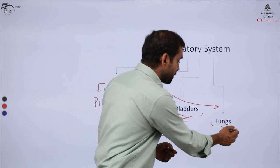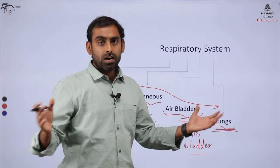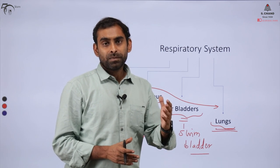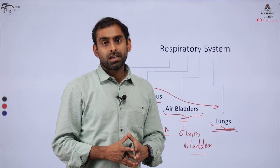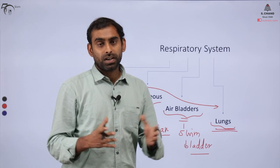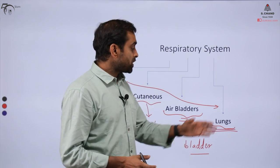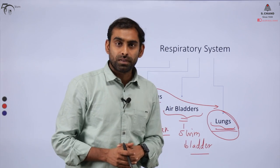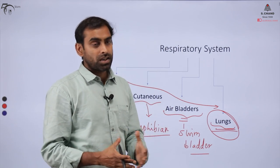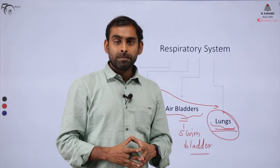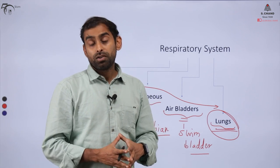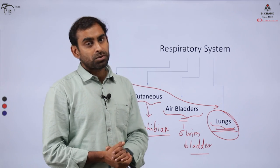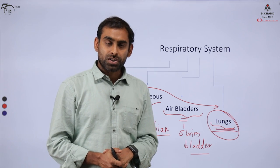Finally, we have lungs, which are present in most of the taxons — including reptiles, amphibians, mammals, and also aves, that is birds. In all these cases lungs are present. The anatomy of lungs differs across different organisms — their shape, size, and the way they work varies. We will discuss all these things in this video. Let us start our discussion with gills.